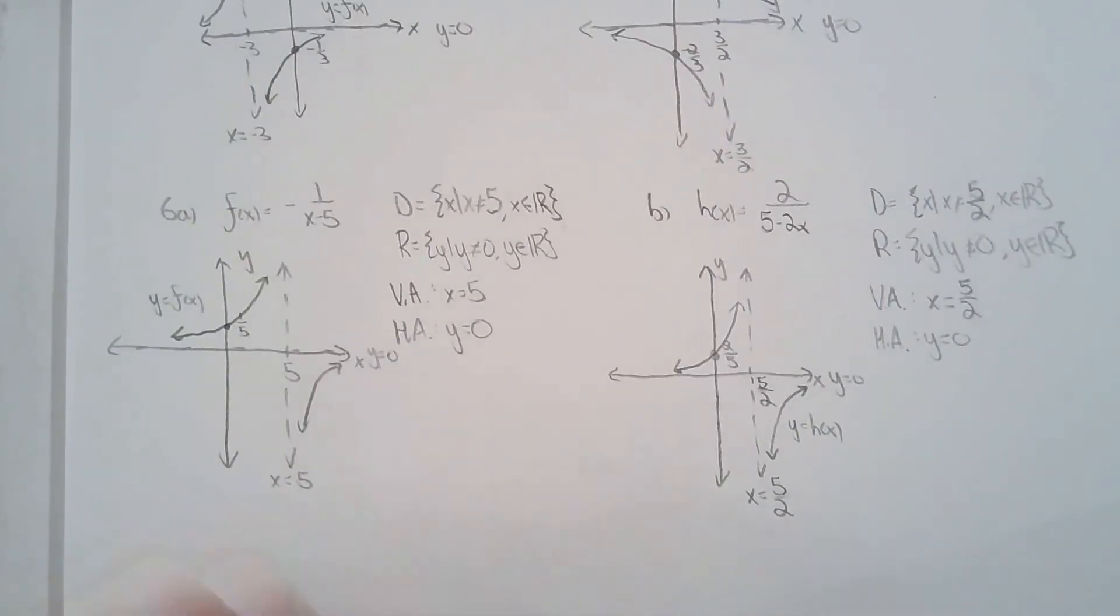For question 6, they gave me the function, asked me to graph it, find the domain, range, equation of asymptotes, and label the y-intercept. So I did all that. How I graphed it was same as how I graphed 5. Asymptotes and y-intercept and knowing that there's no x-intercept, there's only really one graph that can fit the criteria.